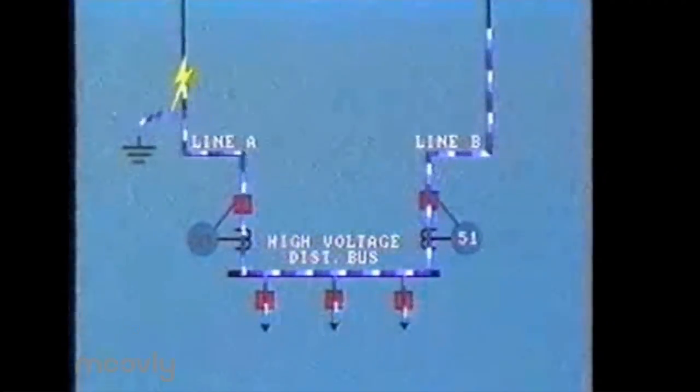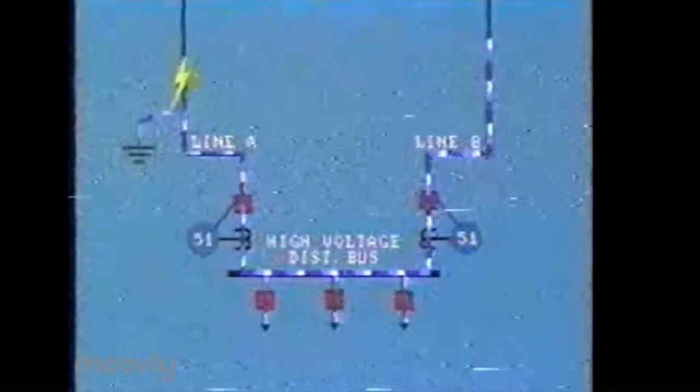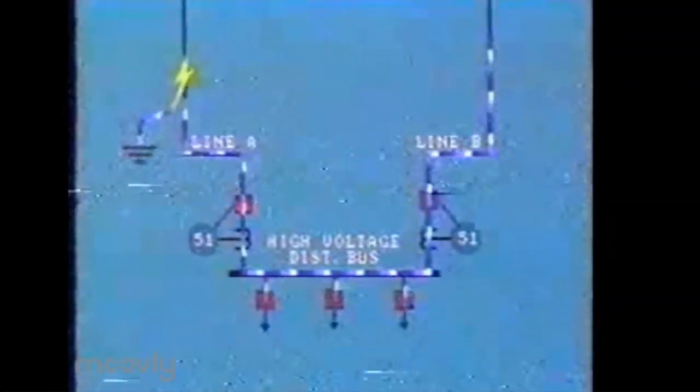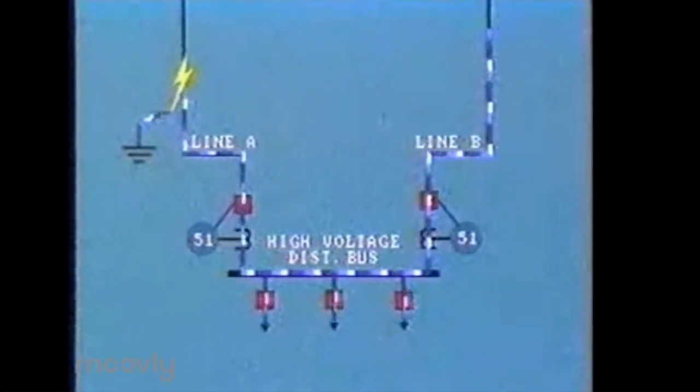Since the current is the same throughout the line, line B also carries the same fault current. The relay 51 in line B also detects the fault.